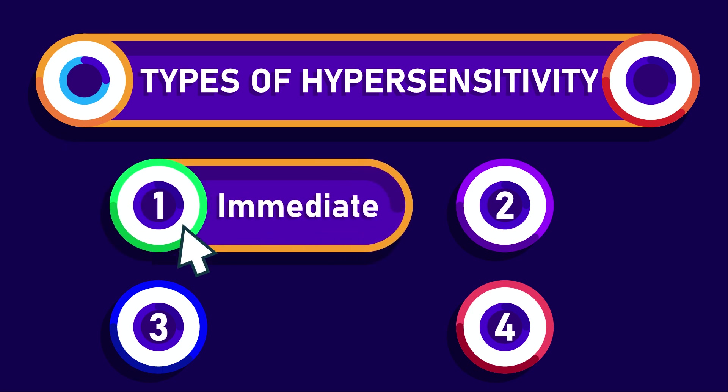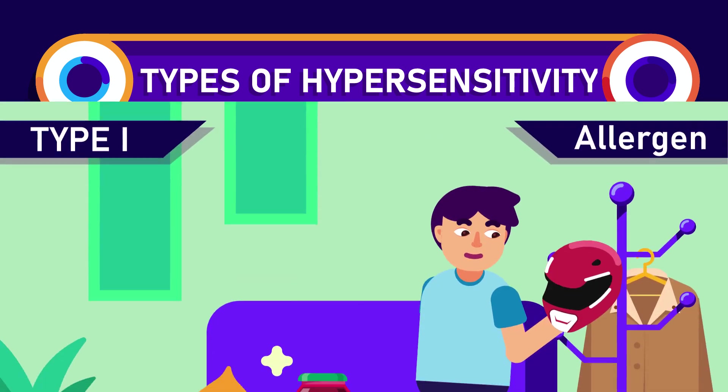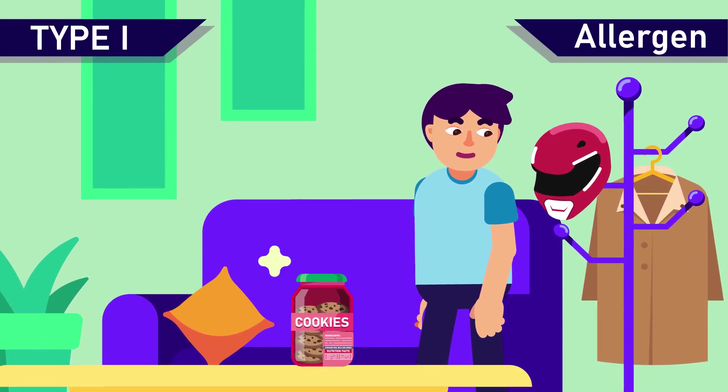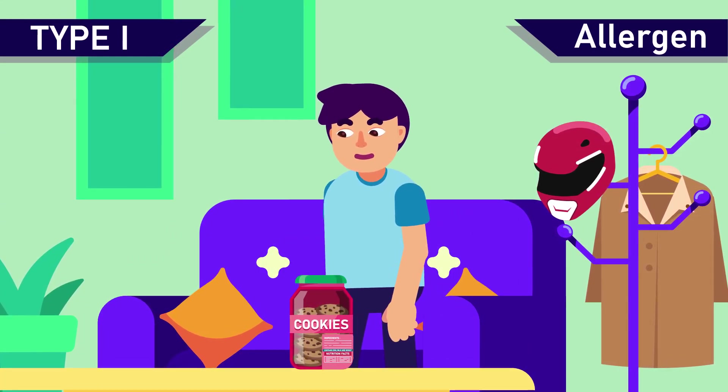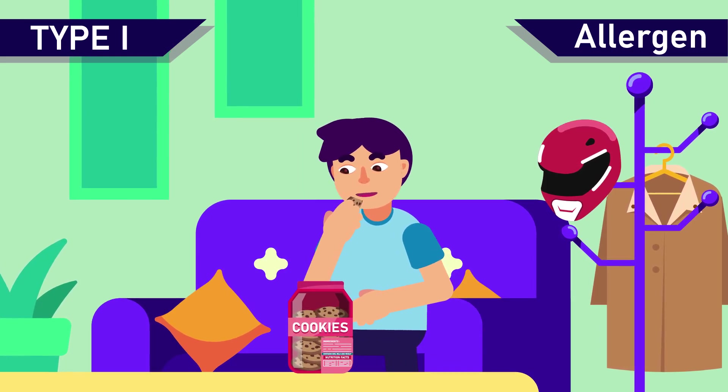Type 1, or immediate hypersensitivity. This type of hypersensitivity is mediated by IgE antibodies and mast cells. It manifests within minutes if re-exposed to the antigen.